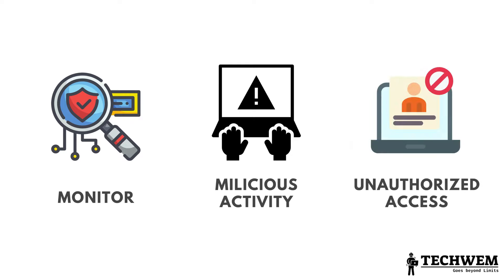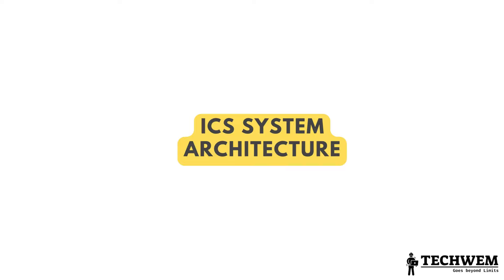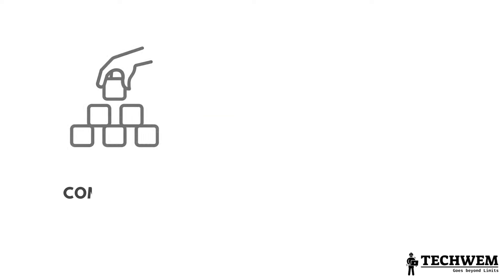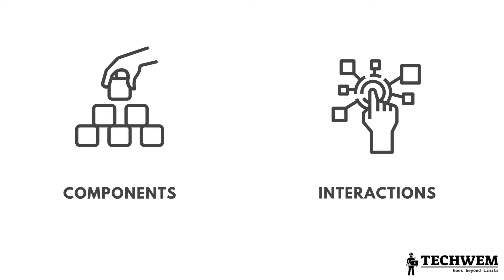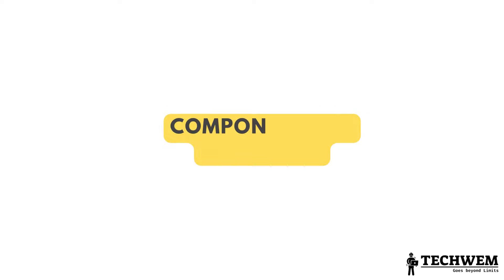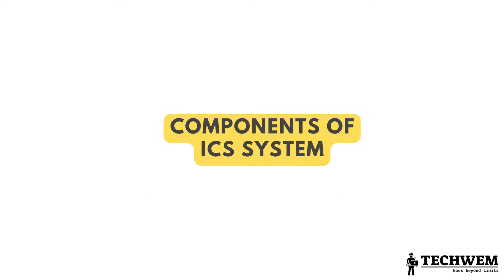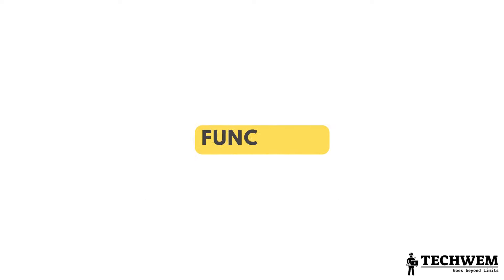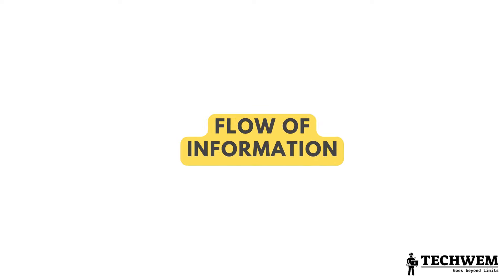These definitions should provide you with a good starting point to understand the key terminologies in the field of OT cybersecurity. Now that we have a good grasp of the key terminologies, let's take a closer look at the architecture of a typical ICS system. Understanding the components and their interactions will provide us with valuable insights into how OT cybersecurity measures should be implemented. Let's delve into the components of a typical ICS and discuss their functions and the flow of information and control between them.